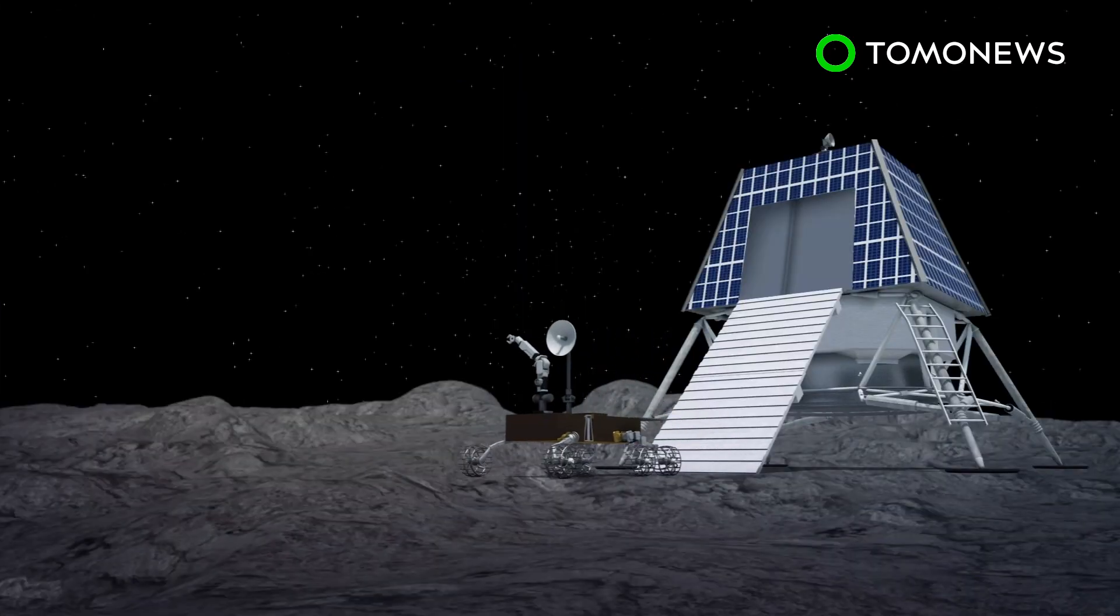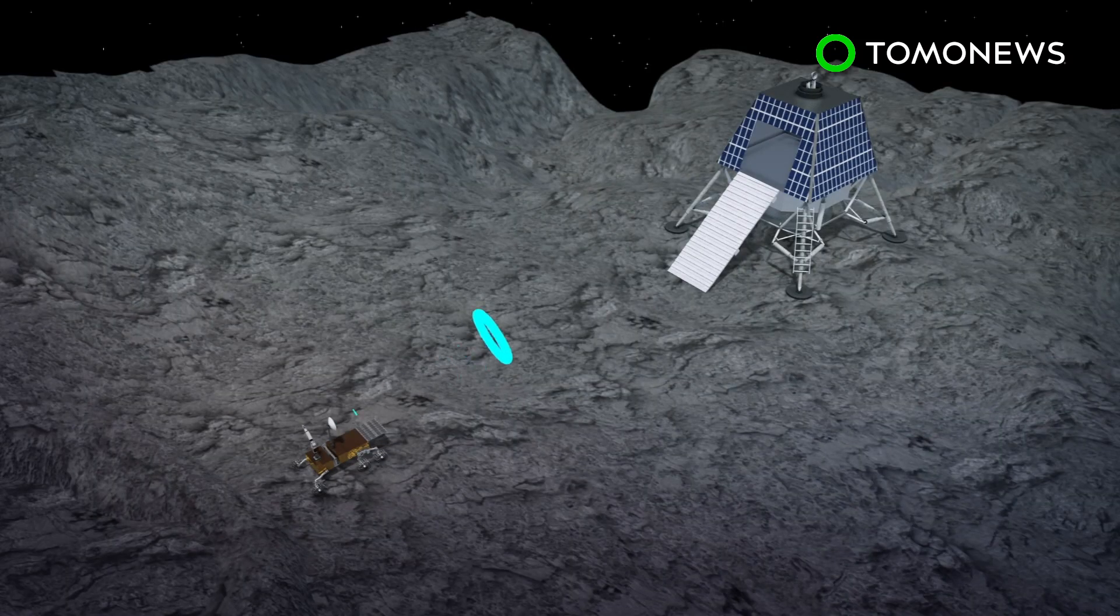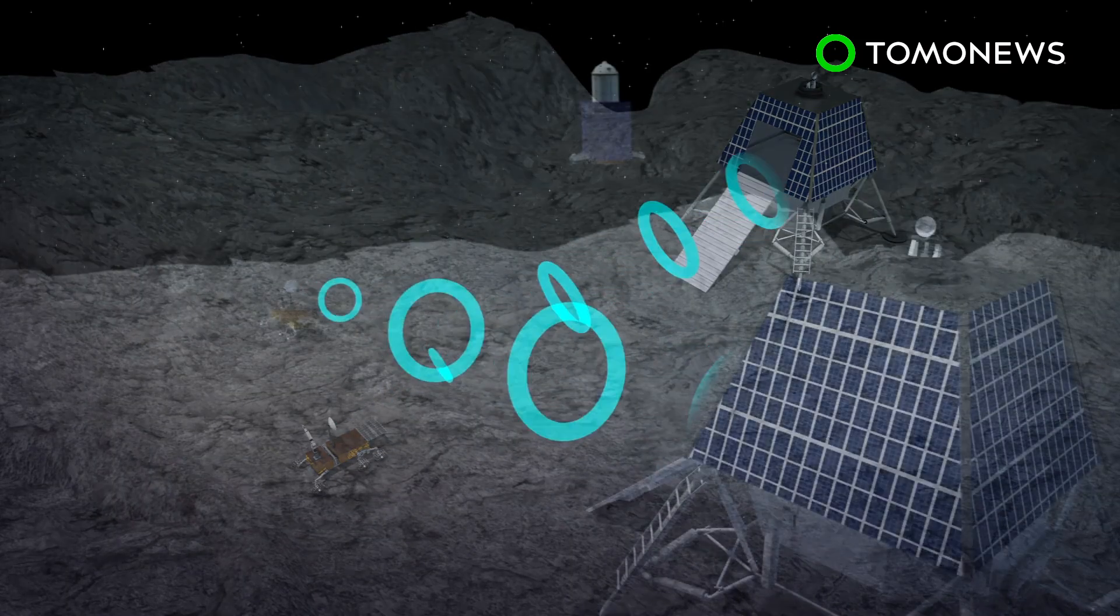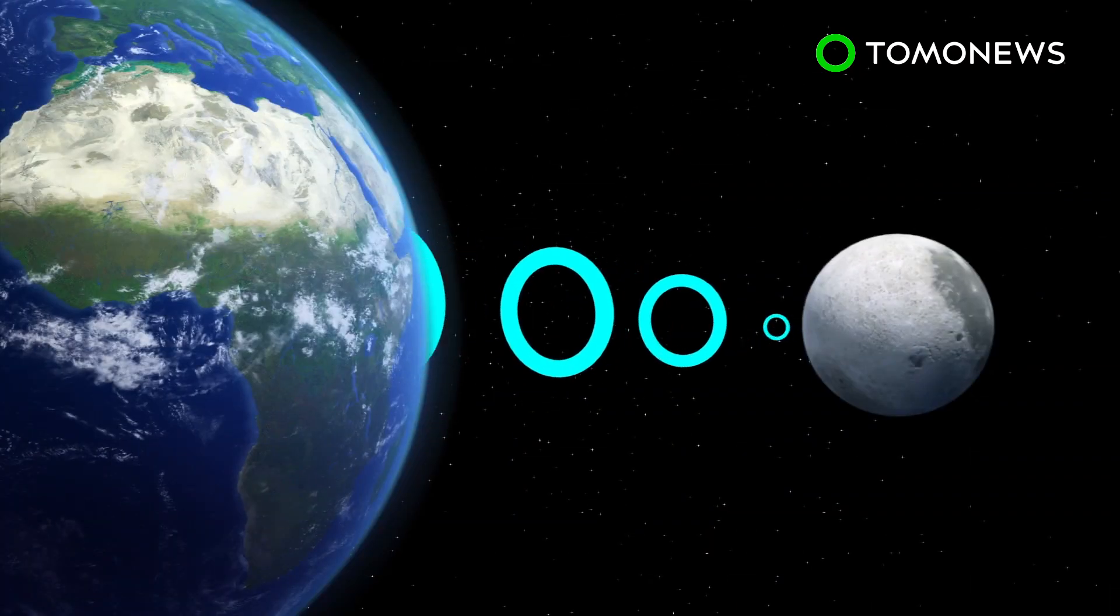Once on the moon's surface, the rover will be able to move around semi-autonomously. It will analyze the moon's surface and send data to the lander. According to ISRO, the lander would then be able to relay information to the orbiter and to Earth.